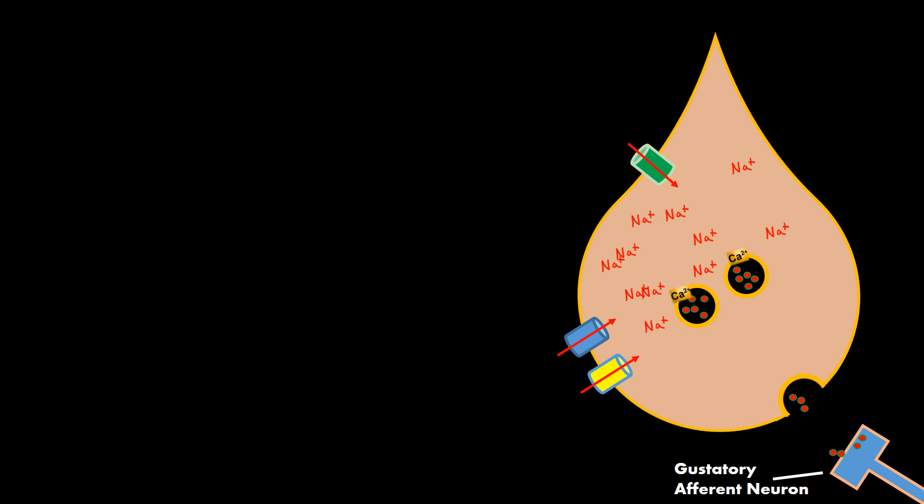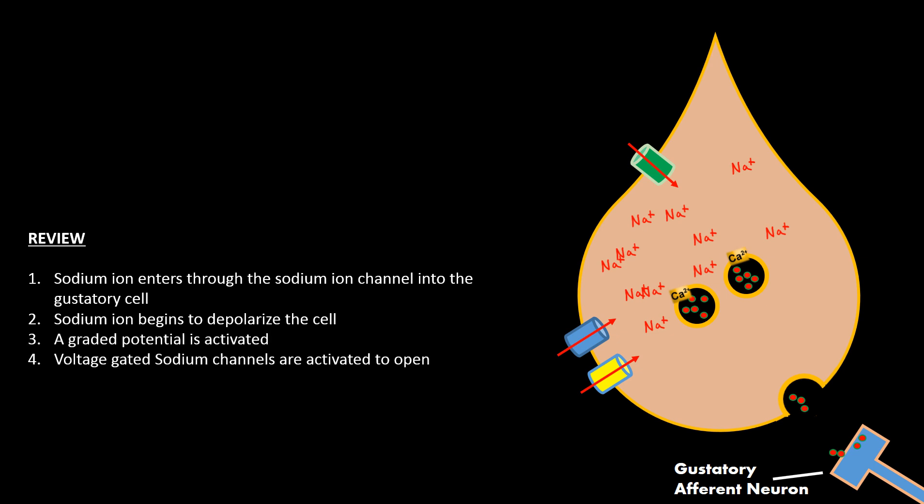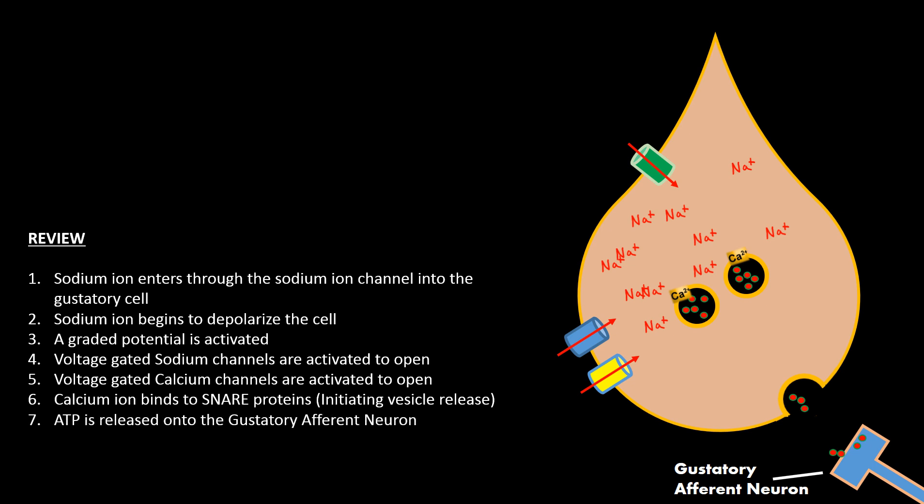So let's go ahead and review what we just went over. First, sodium enters through the sodium ion channel into the gustatory cell. Sodium ion begins to depolarize the cell. A graded potential is activated. Voltage gated sodium channels are activated to open. Voltage gated calcium channels are activated to open. Calcium ions bind to the SNARE proteins initiating vesicle release. And ATP is released onto the gustatory afferent neuron causing the salty taste.